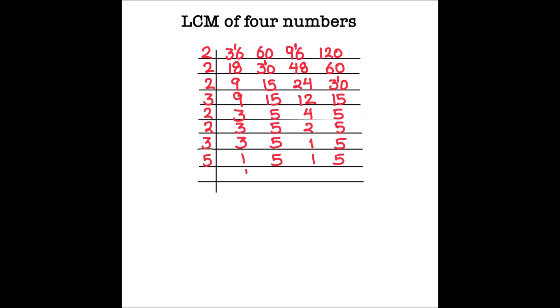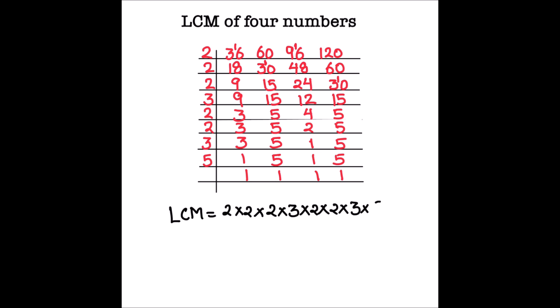Now we can divide by 5. All the numbers are now fully divided. To find the LCM, we take the product of all the numbers on the left-hand side of the ladder. So the LCM will be 2 × 2 × 2 × 2 × 2 × 3 × 3 × 5.